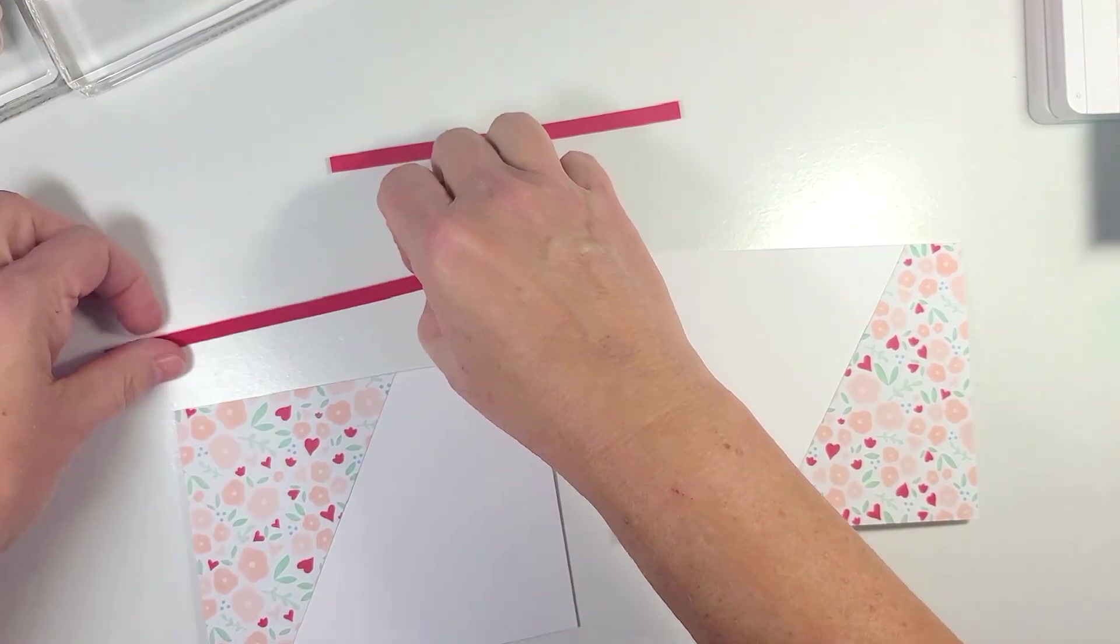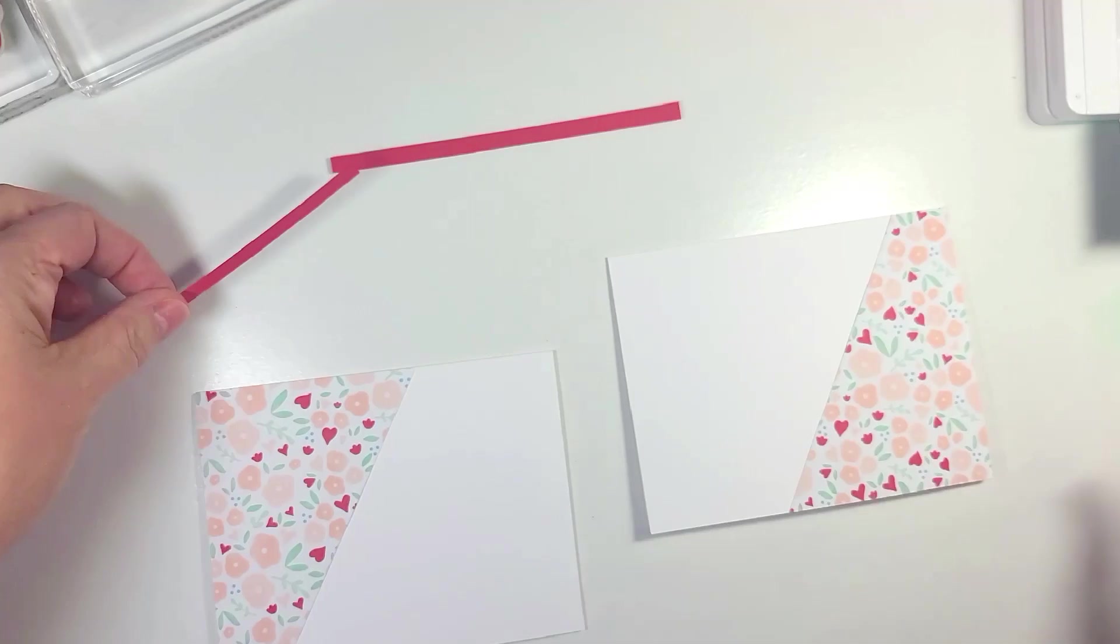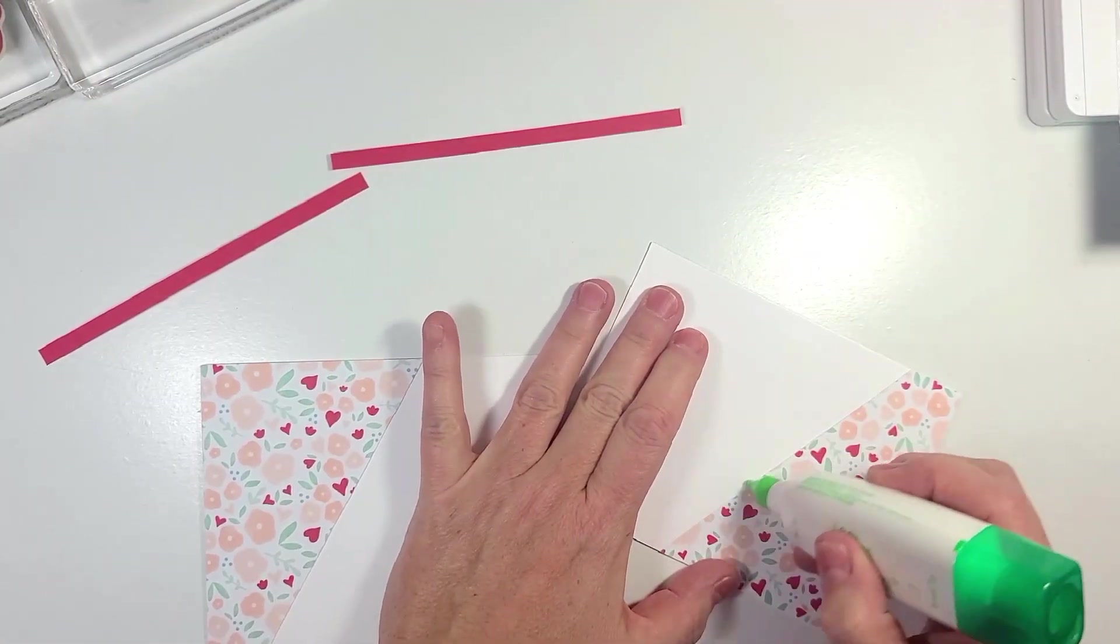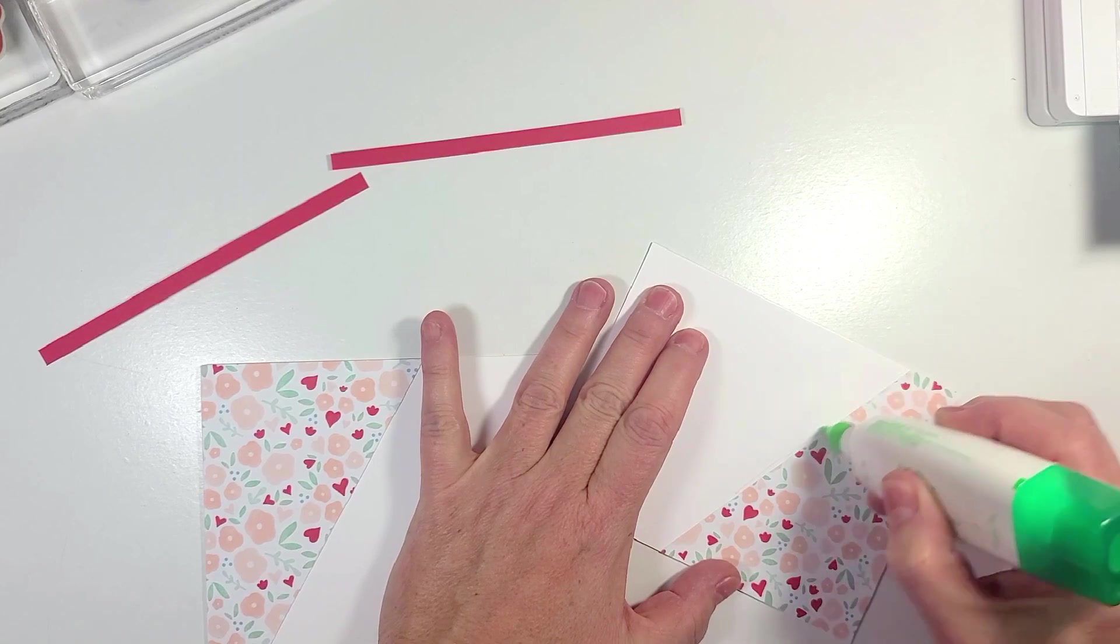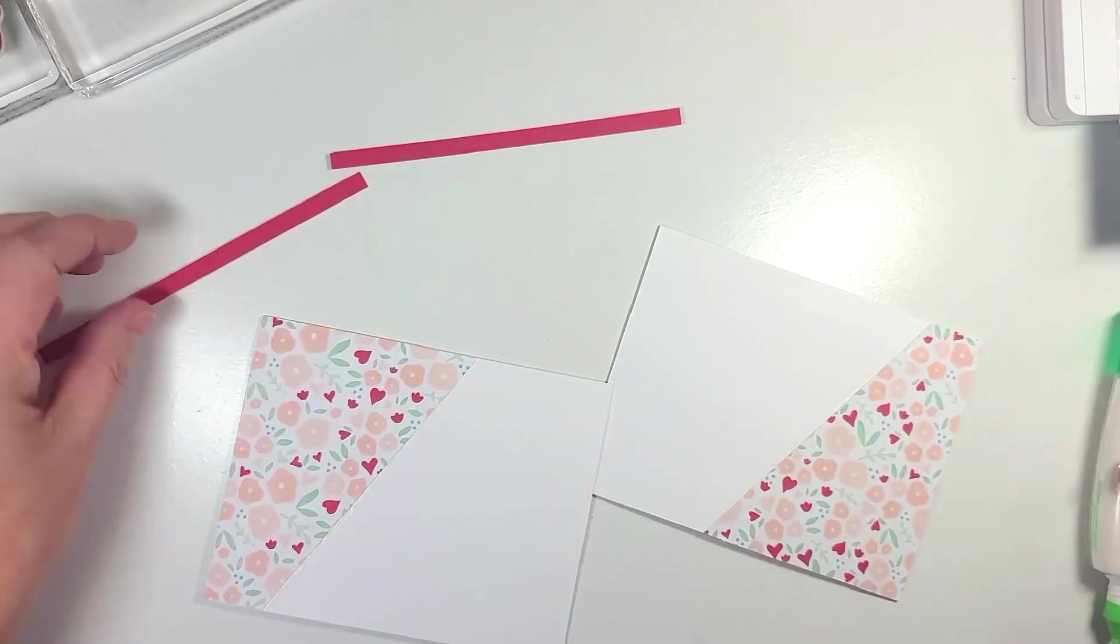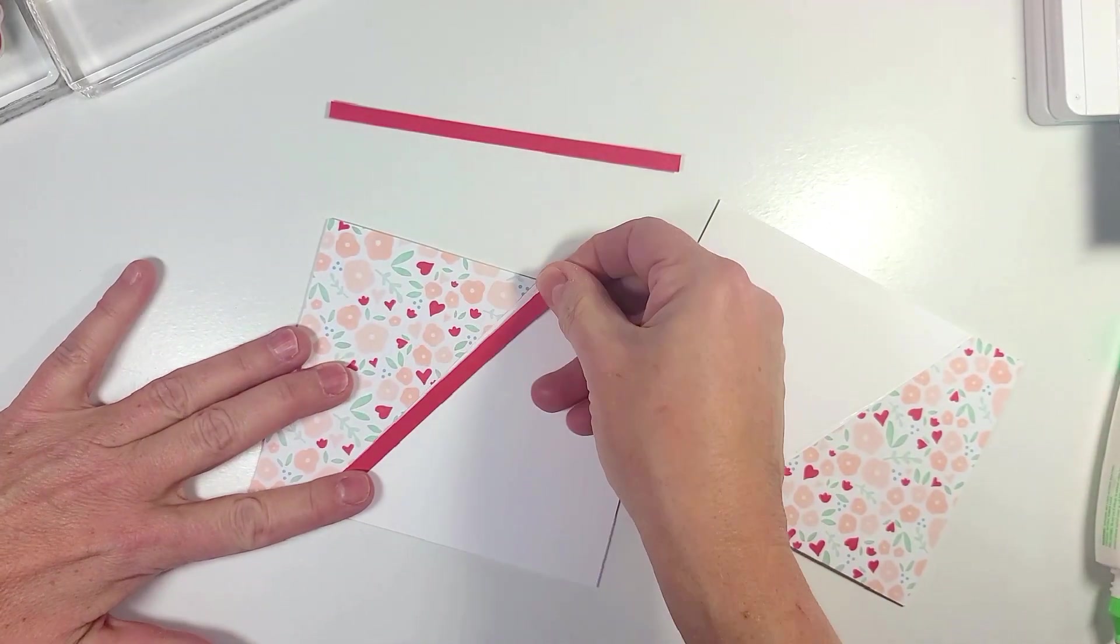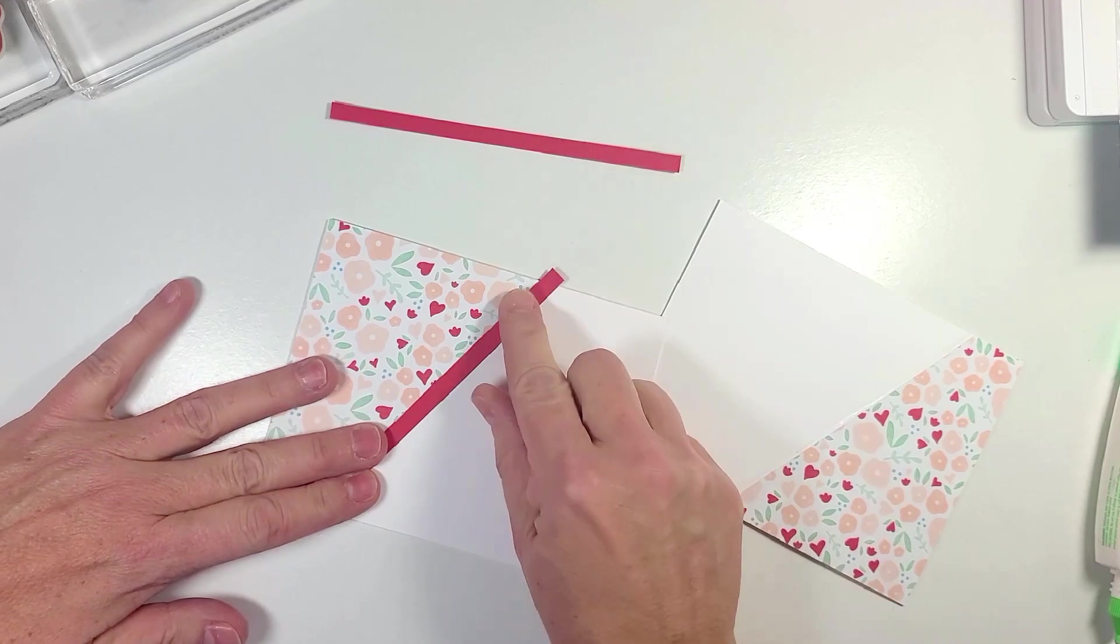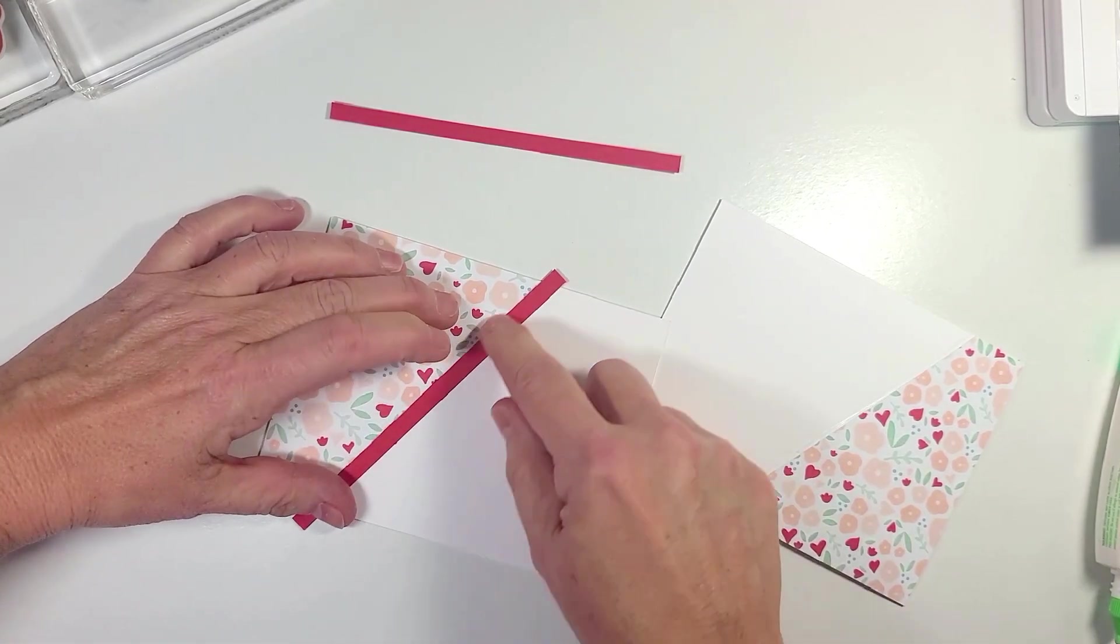Now we're going to take these pieces here. You can add glue directly onto the strip or what you can do is you can just add a thin line of adhesive right here along the edge of both strips. Now we're going to take our card stock and we're just going to lay it right over, making sure that you give enough room so you got a little hanging off the top up here and a little hanging down over there.